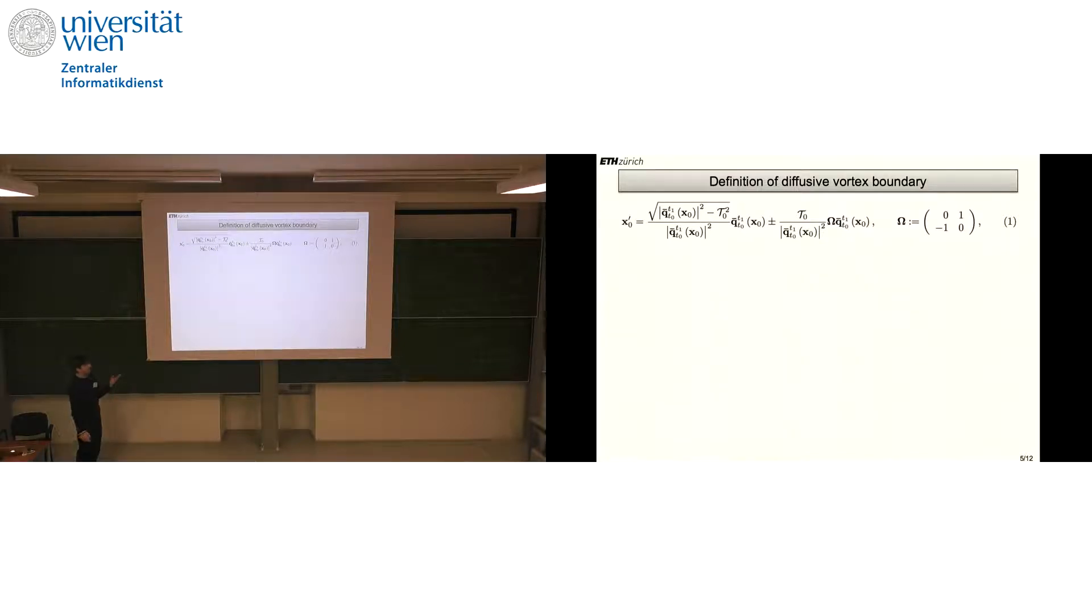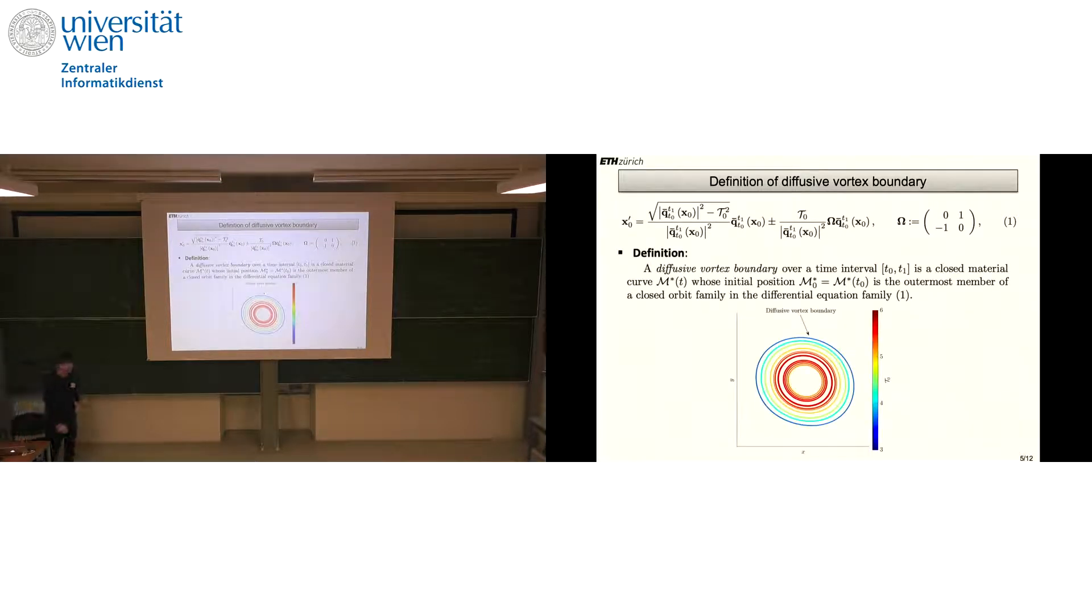Now we have all the ingredients to define what a diffusive vortex boundary is. The diffusive vortex boundary over the time interval from T₀ to T₁ is a closed material curve M*, whose initial position M₀* is the outermost member of the closed orbit family of this differential equation. By altering the T_av value one can get different solutions.